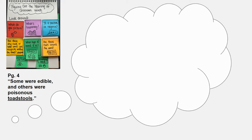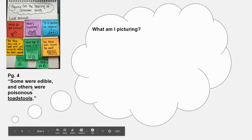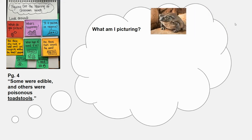We have our anchor chart here to remind us of the different strategies. The first one is: what am I picturing? Toadstool. Honestly, I picture a toad, because I can think of what a toad looks like, and I can picture a stool, like the kind you sit on. But since Ralph is talking about things he finds in the woods, I don't really think he's referring to a toad sitting on a stool. So I'm thinking that maybe the word toadstool has a different meaning than each of the individual words within it.